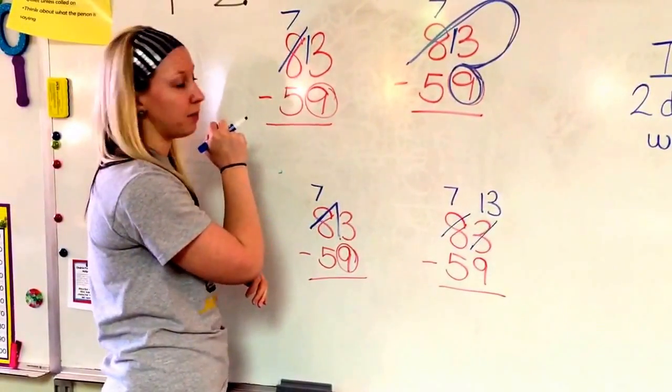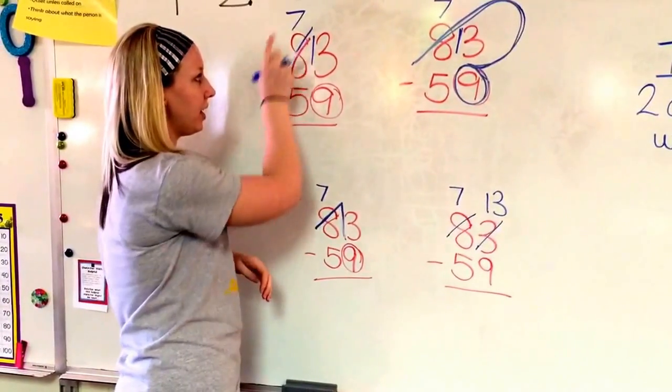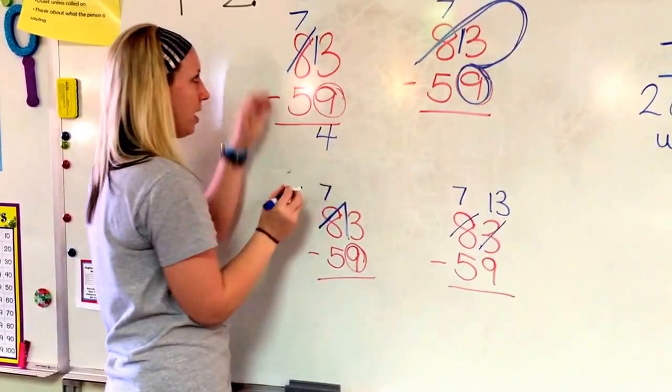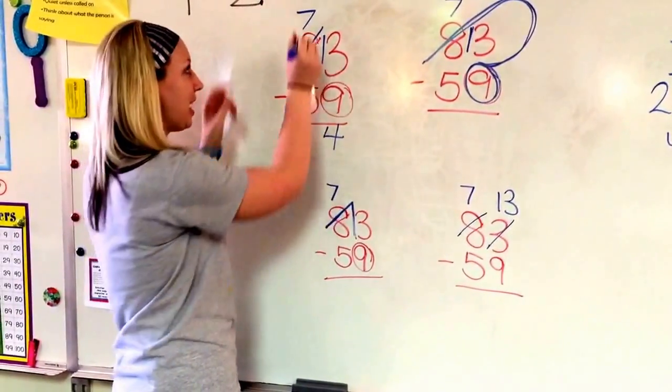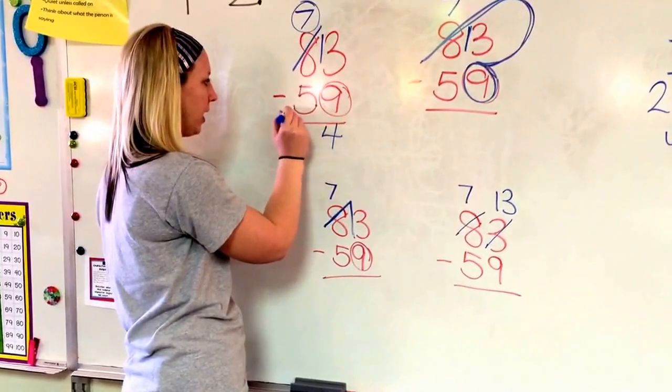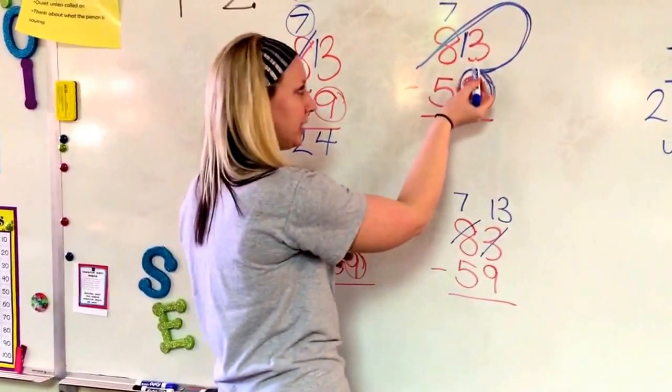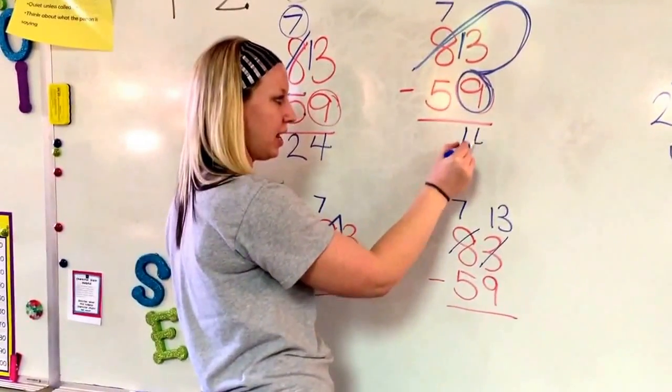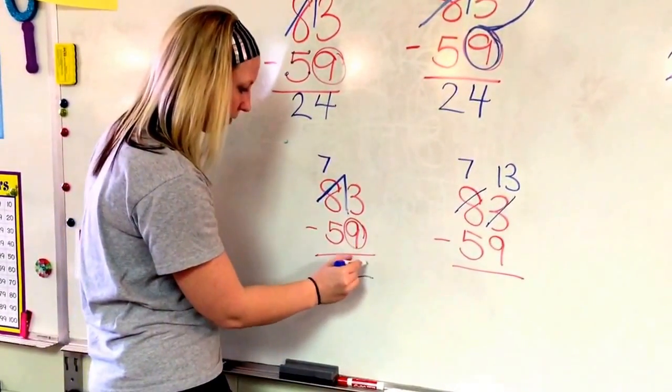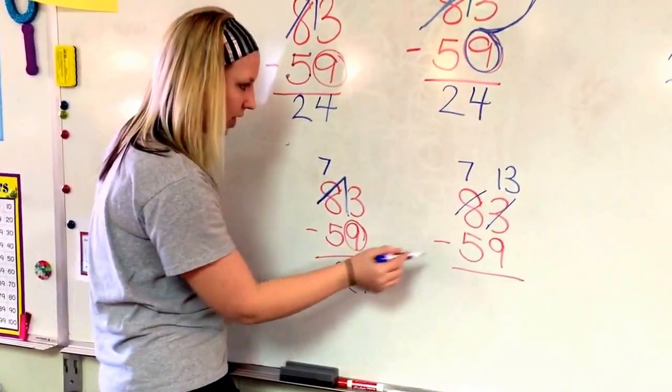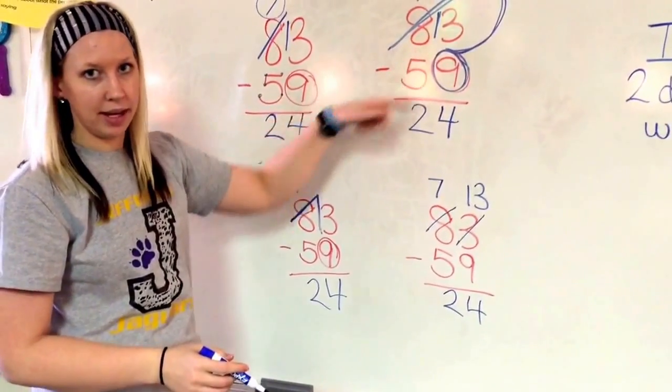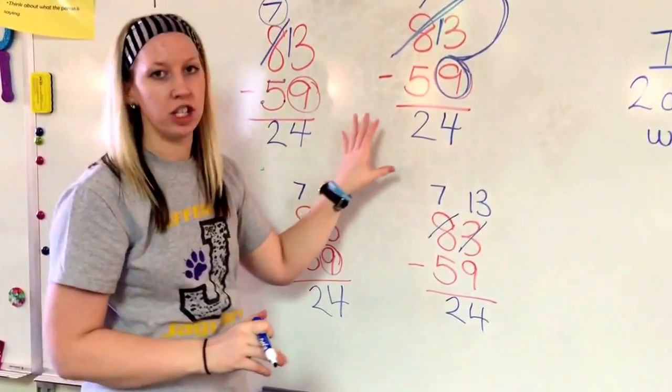But I'm going to get the same answer however I do it. So I just crossed out my 8 because I needed to borrow a 10. And I changed it to a 7. I brought my 10 over, 13 minus 9. That's 4. Now I've got more on top, so no need to stop. More on top. 7 minus 5 is, well, 6, 5, 4, 3, 2. And my answer is 24. You'll do it exactly the same way. It's still 13 minus 9 is 4. 7 minus 5 is 2. Same thing here too. 13 minus 9 is 4. 7 minus 5 is 2. And 13 minus 9 is 4. 7 minus 5 is 2. So whichever way you want to do it, you're going to get the same answer no matter what. You guys just pick which way you want to do it.